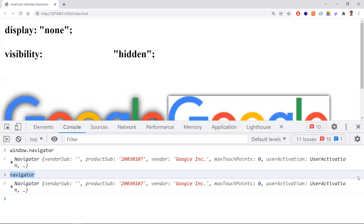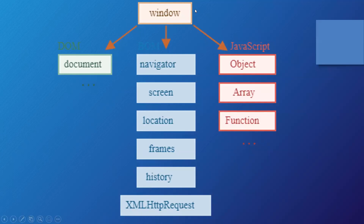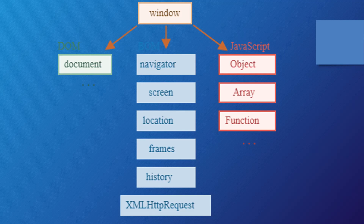You can access these window properties directly. One more point: if you use an iframe in your web page, that iframe will have its own window object. We can consider the iframe's window object as a child and the main page's window object as the parent. So iframes also have their own independent window objects.